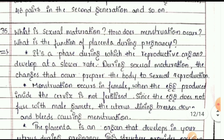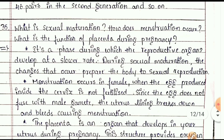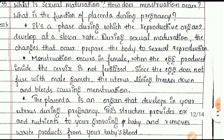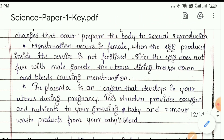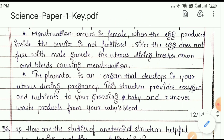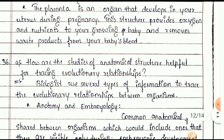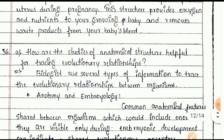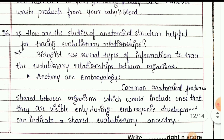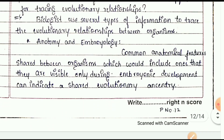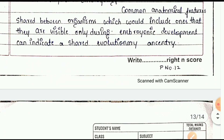What is sexual maturation? How does menstruation occur? What is the function of the placenta during pregnancy? These are three-mark questions. See the answer and note which points you should write.